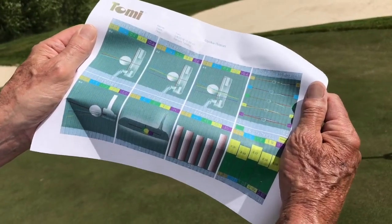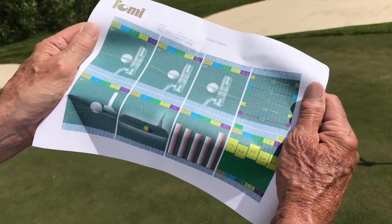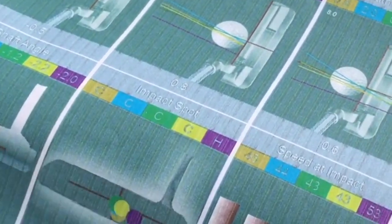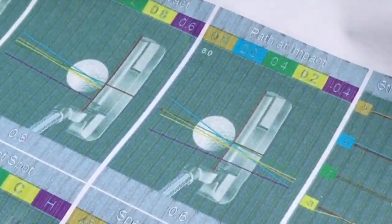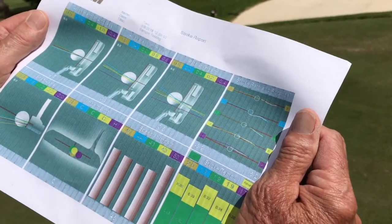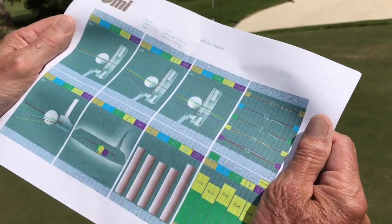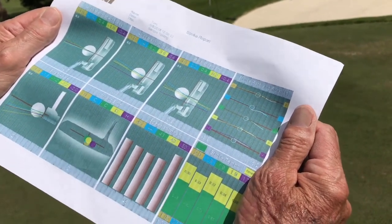The other thing that's critically important that this Tommy Analyzer shows us is the path at impact. Is the putter coming too much inside out, too much outside in? Obviously we want the alignment at address and at impact to be square to the target, and the path, the return at impact, that putter down the line.